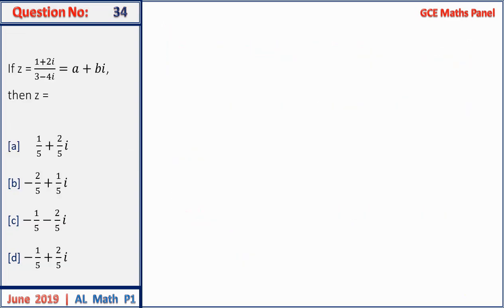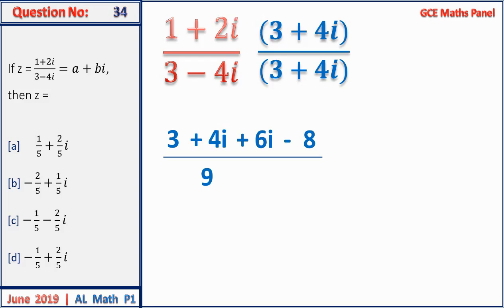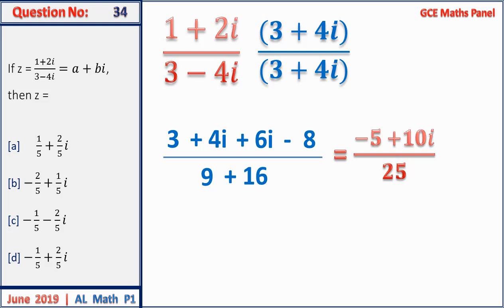Question 34: z = (1 + 2i)/(3 − 4i). Multiply numerator and denominator by conjugate 3 + 4i. Numerator: 3 + 4i + 6i + 8i² = 3 + 10i − 8 = −5 + 10i. Denominator: 9 + 16 = 25. So z = (−5 + 10i)/25 = (−1 + 2i)/5. The answer gives the values of a and b.